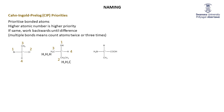Now look at this amino acid. Some of you may have heard of the CORN rule for amino acids, but it's just as easy to use the general CIP rules. We have a nitrogen, a carbon, a carbon, and a hydrogen. Nitrogen is the highest priority and hydrogen is the worst. For the two carbons: the methyl carbon goes to three hydrogens, but the acid group carbon bonds to three oxygens — a double-bonded oxygen and a single-bonded oxygen. An oxygen trumps any hydrogen, so the COOH group is number two and the methyl group is number three.